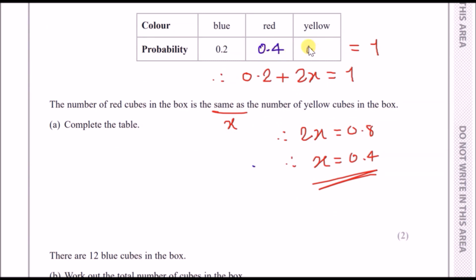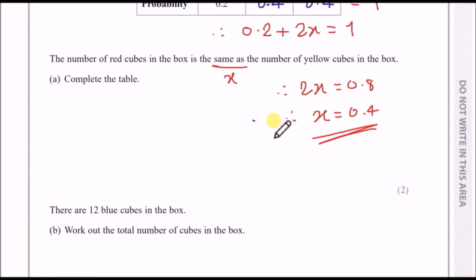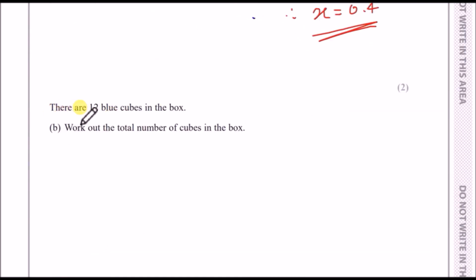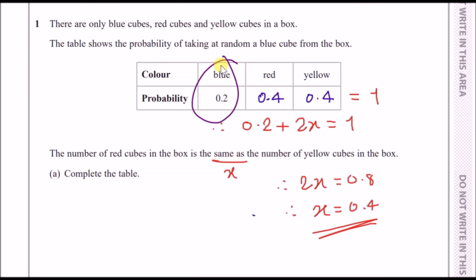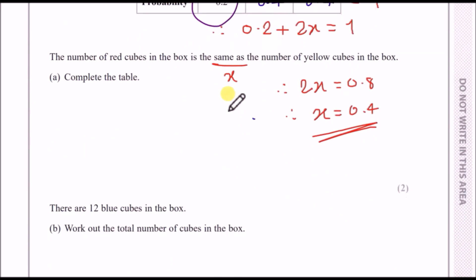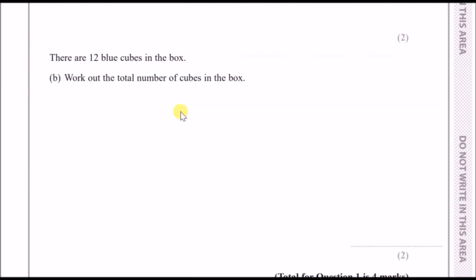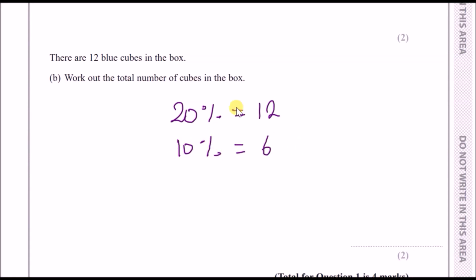For part 1b, there are 12 blue cubes in the box and we need to find the total number of cubes. From the table, the probability for blue is 0.2, meaning 20% of all cubes are blue. So 12 equals 20% of the total — 10% must be 6, and multiplying by 10 gives a total of 60 cubes.